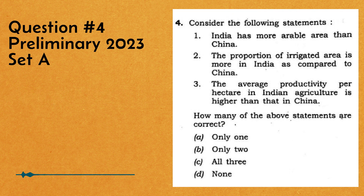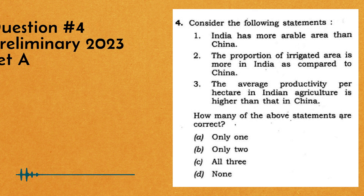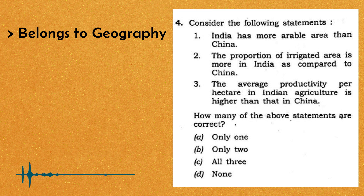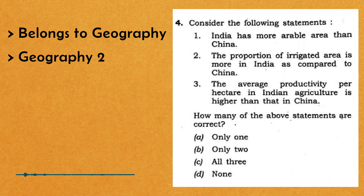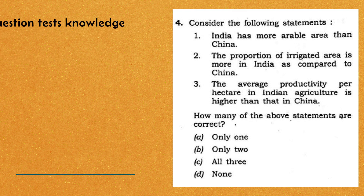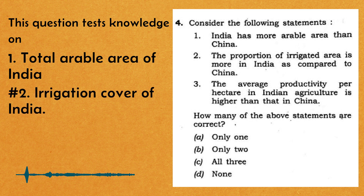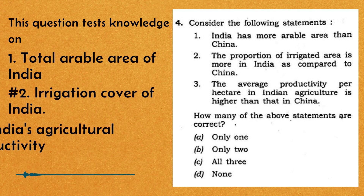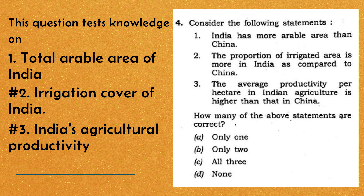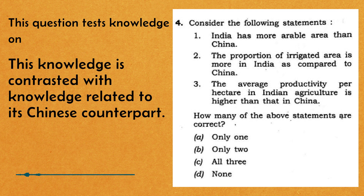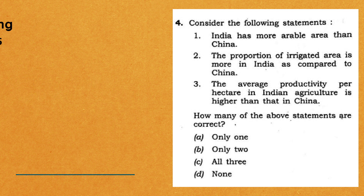In today's edition, we will deconstruct the fourth question of Preliminary 2023 Set A. Ye question bhi like the past three questions we have analyzed, geography se hi hai aur common terminology mein baat kare toh, yeh hai geography 2 se. Is question mein India ki total cultivable area, India ka land under irrigation aur India ki agricultural productivity per hectare per knowledge ko test kiya gya hai aur isko compare kiya gya hai China ki total cultivated area se, total area under irrigation se aur China ki productivity per hectare se.